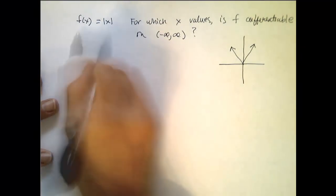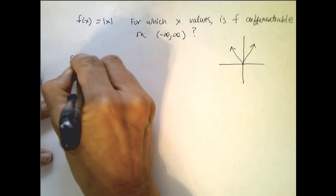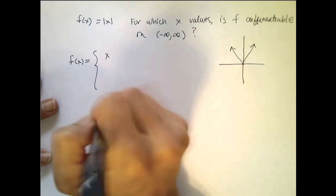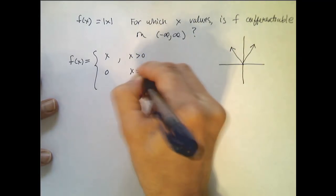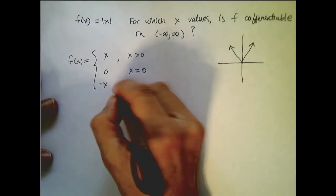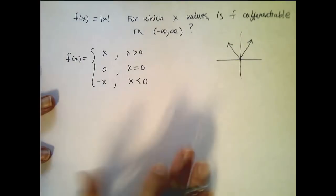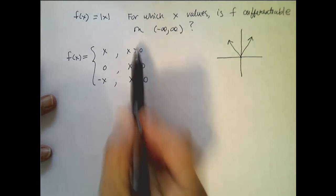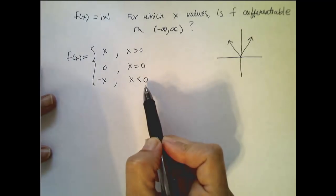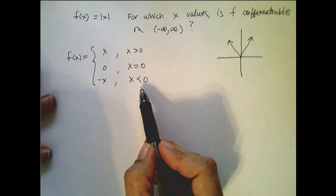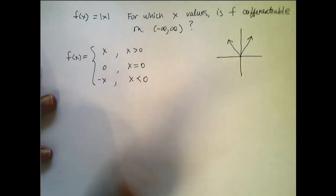In order to talk about the limit, I need to rewrite the absolute value as a piecewise function. Remember that f of x, the absolute value of x, equals x if x is greater than 0, it equals 0 if x equals 0, and it equals the opposite of x if x is less than 0. Now I have two different intervals here — numbers when x is greater than 0 and numbers when x is less than 0 — and I need to talk about all those different places and their respective differentiability.